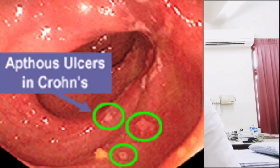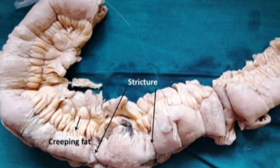Looking at the gross structure of Crohn's disease: the primary finding is aphthous ulcers. These aphthous ulcers can coalesce together to form serpentine ulcers. You can also see creeping fat, where the mesenteric fat oozes out and surrounds the intestinal layers — this is a classic feature of Crohn's disease.